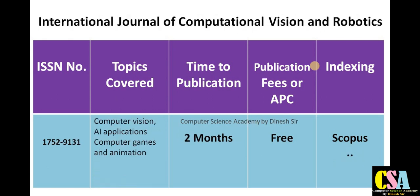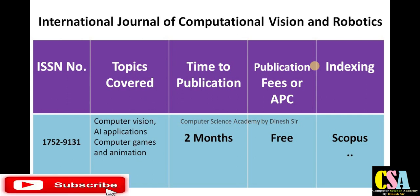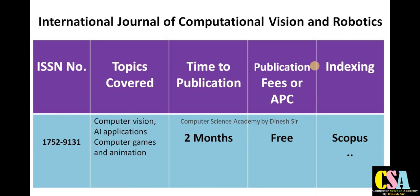The next journal is the International Journal of Computational Vision and Robotics, ISSN 1175-2913. Topics covered include computer vision, AI applications, computer games, and animation. Publication time is a maximum of two months, with notification likely within one month or less. There is no publication charge for this Scopus-indexed journal.